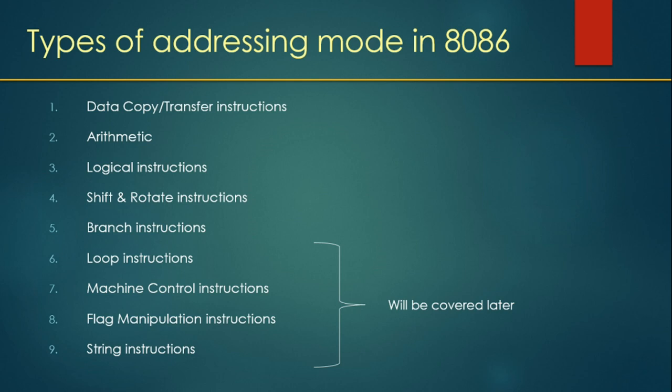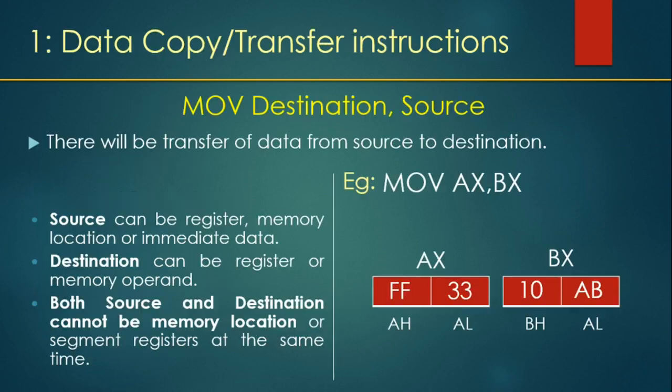Let us jump into the first type: data copy and transfer instructions. As the name suggests, in these instructions data will be copied to a certain location from a certain location. The format given is: MOV destination, source. What is going to happen is that data from source will be copied to the destination — a transfer of data from source to destination.